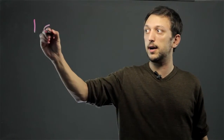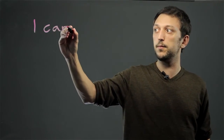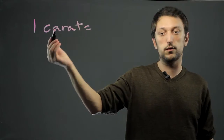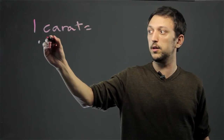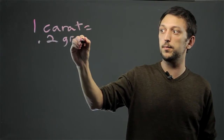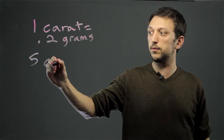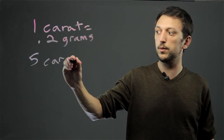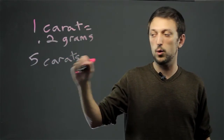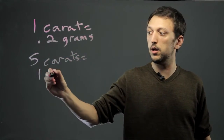Hi, I'm Charlie Kasov and this is the carat weight of diamonds in grams. This is a very simple conversion because 1 carat equals .2 grams. That means for every 5 carats you have 1 gram.